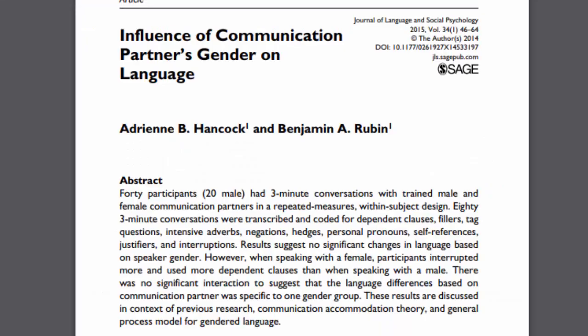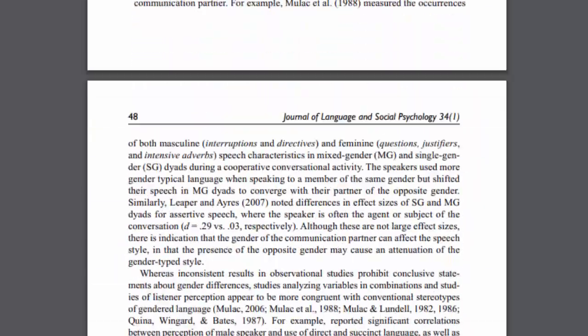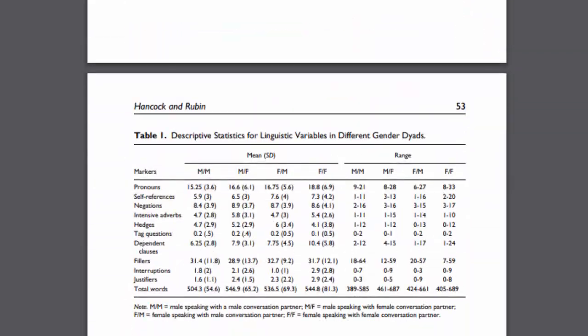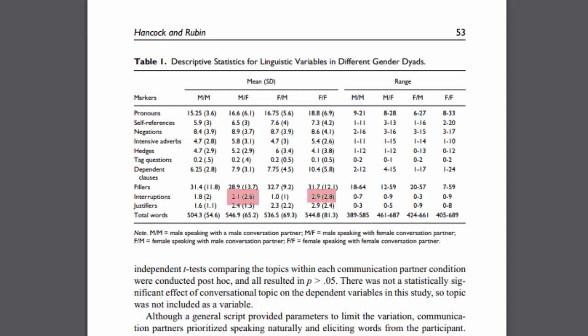Reading articles outside of your field can be difficult, but you can take a look at the abstract and see if it lines up with what's reported in the popular source that you found. In the abstract, it says that a significant result was that participants interrupted female speakers more, but it doesn't say whether there was a significant difference in which gender the interrupter was. To see the full findings, go into the results section to look for the results chart. On this chart, you'll see that both men and women interrupt women more often than they interrupt men.